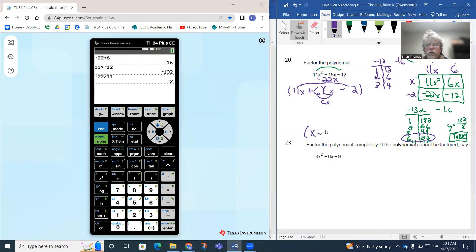So notice how the 11x plus 6 and the x minus 2 becomes my factorization. So in the box method you're seeing x minus 2 times 11x plus 6, and also order does not matter there in that.